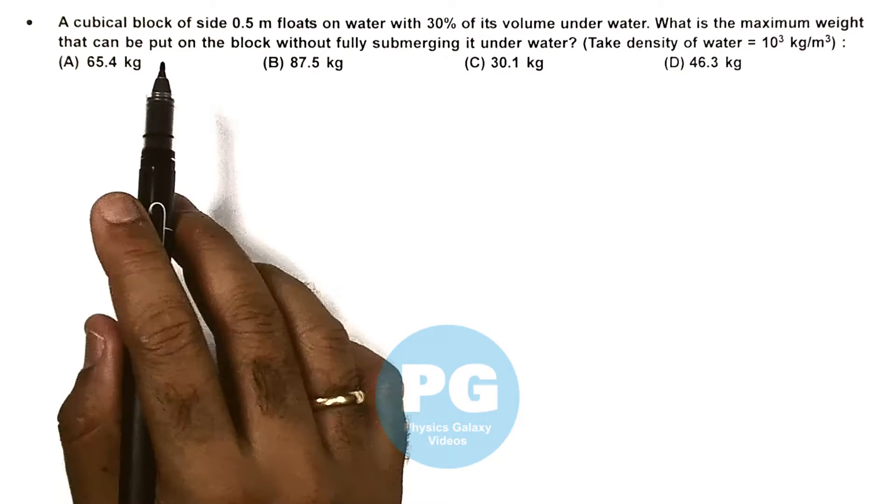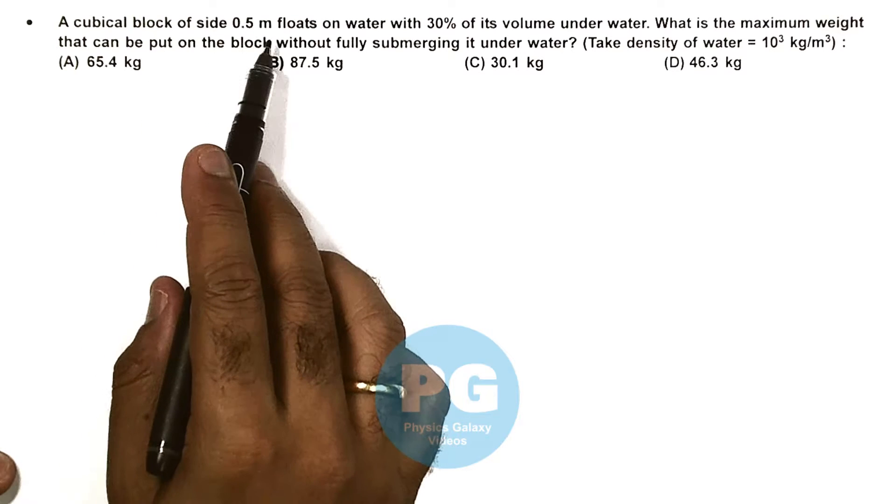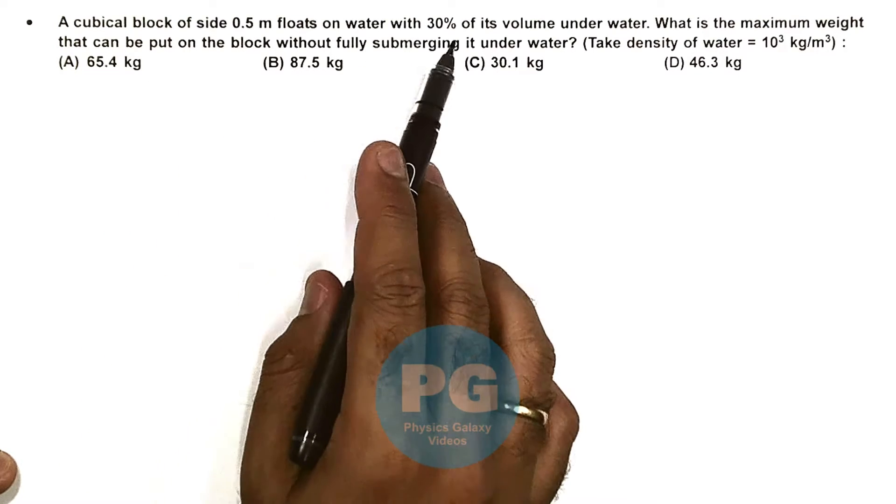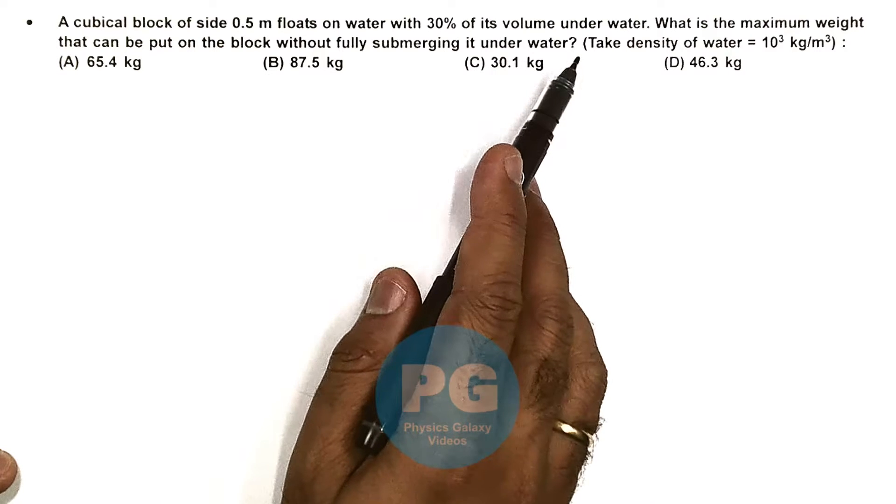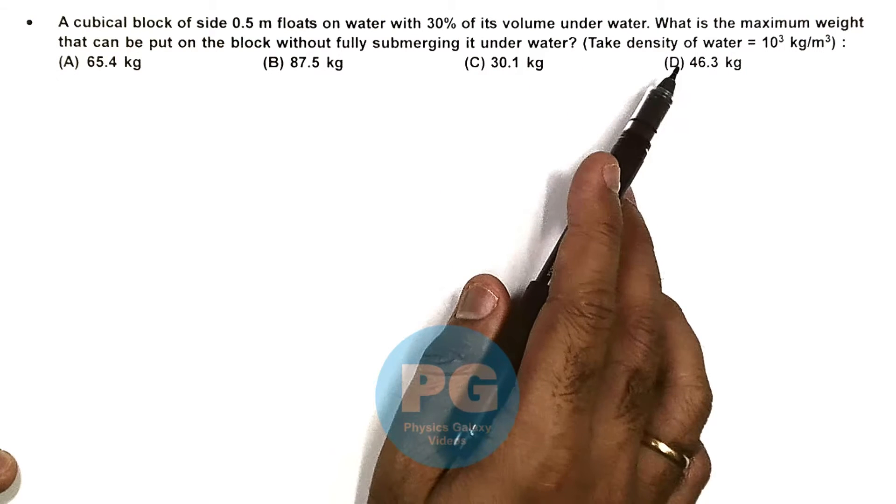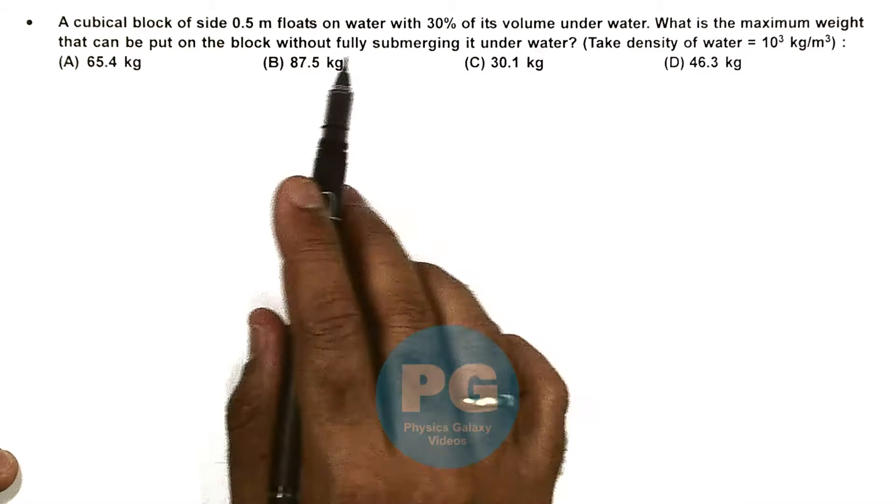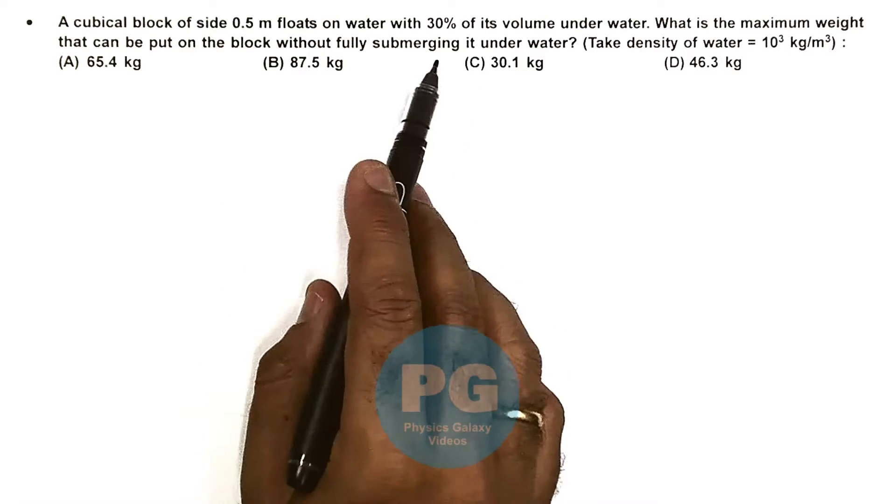In this question, a cubical block of side 0.5 meter floats on water with 30% of its volume underwater. It is asking what is the maximum weight that can be put on the block without fully submerging it underwater.